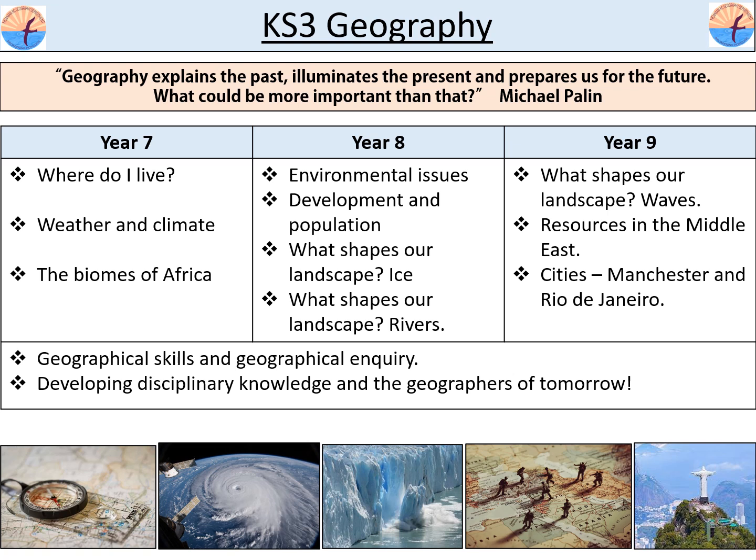When students arrive in Year 7 they begin their geographical journey by securing their locational knowledge. This underpins the geographical concepts that pupils will go on to study. It is essential that students are able to confidently locate where places are. Pupils will also develop their understanding of maps and how to use latitude and longitude to locate places. They will explore Ordnance Survey maps, developing the procedural knowledge that they will need to apply throughout their time studying geography.